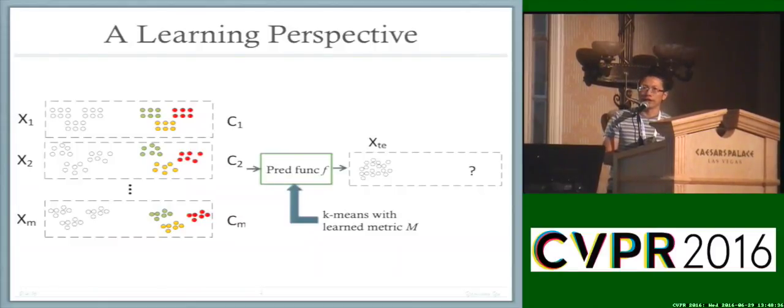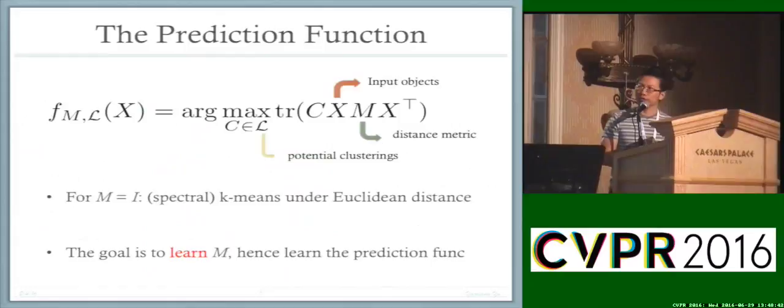To be more precise, the prediction function for our work is in the following form. Here x is a group of objects, and M is a positive semi-definite matrix that encodes a Mahalanobis distance that we try to learn. In particular, if you set M to be the identity matrix, this is nothing but k-means using Euclidean distance. Our goal is to learn a better distance metric M such that k-means will perform better.